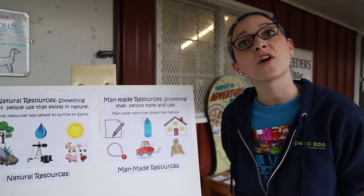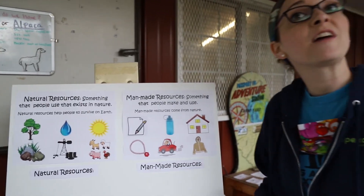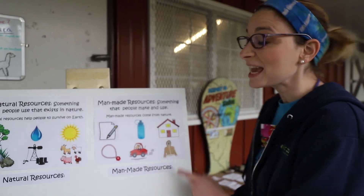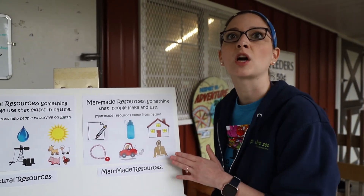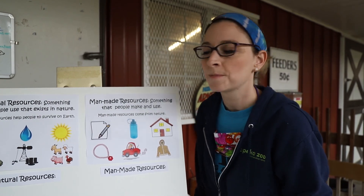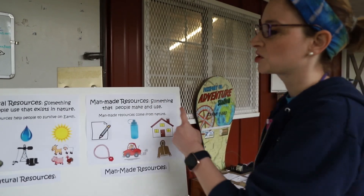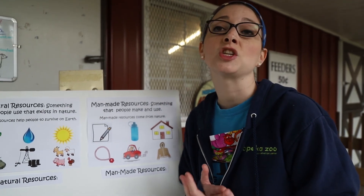Same with all of our clothing. Animals like sheep provide us wool for our clothing, but we have to go and make that wool into a coat or a scarf or a sweater. So man-made resources are ones that humans have to make and to use.